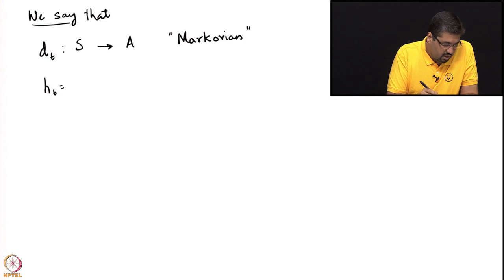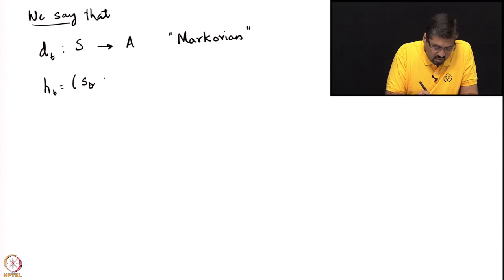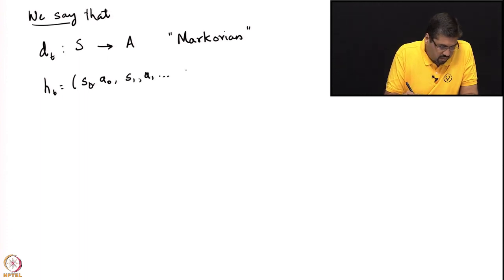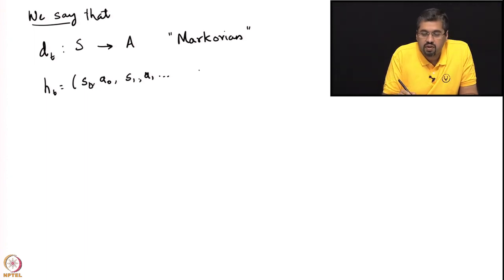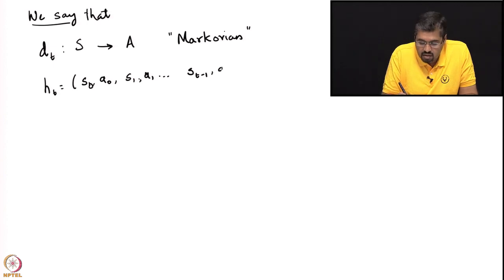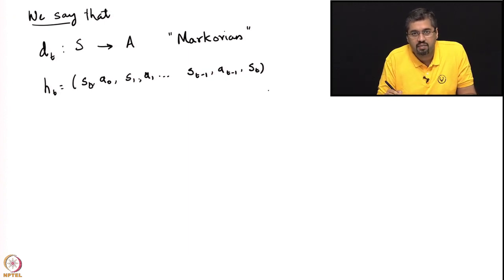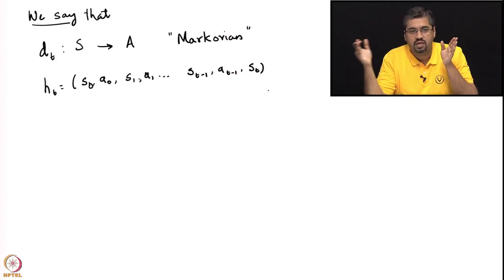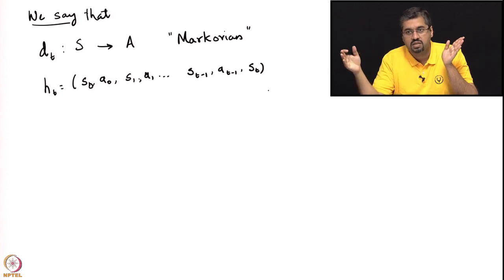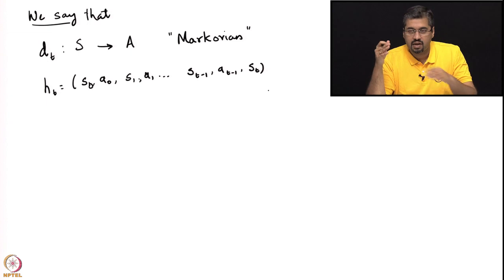Now let us define h_t, the history at time t, as the sequence of states and actions chosen up until time t: state s_0, action a_0, state s_1, action a_1, and so on up to time t. At time t we have seen the state at time t minus 1, the action chosen at time t minus 1, and we have the knowledge of the state at time t itself.